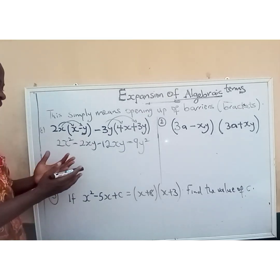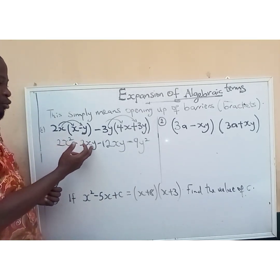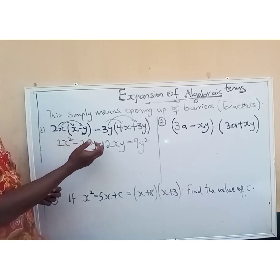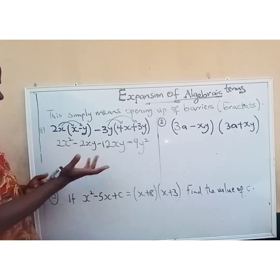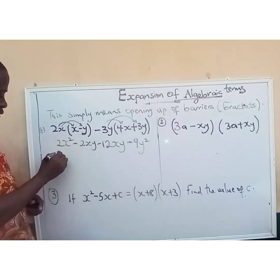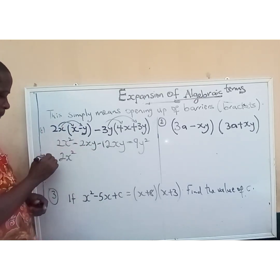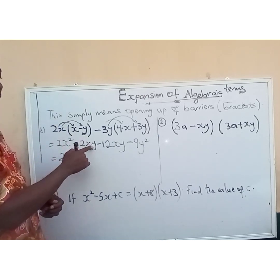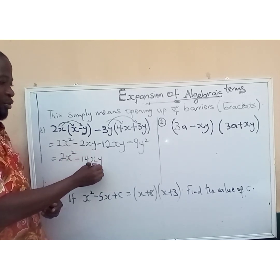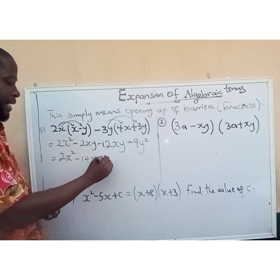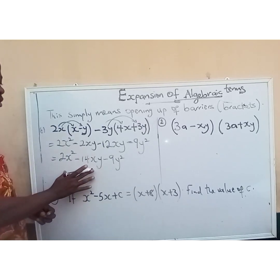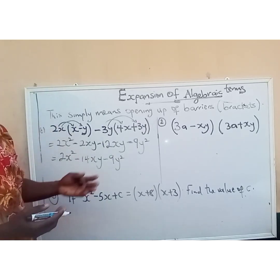Now let's look for like terms. We have minus 2xy and also minus 12xy — they have something in common, so we can combine them. Minus 2xy minus 12xy gives minus 14xy. Our final expanded answer is 2x squared minus 14xy minus 9y squared.